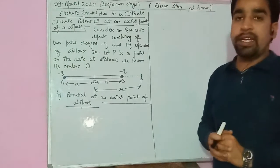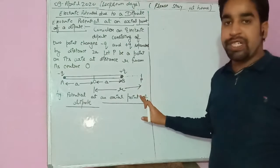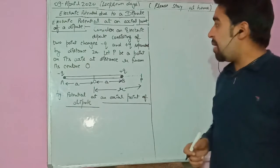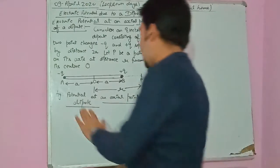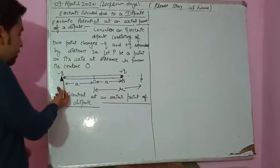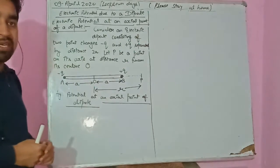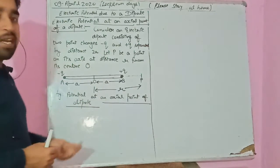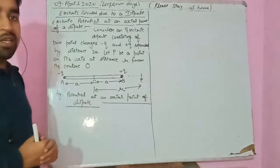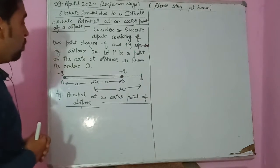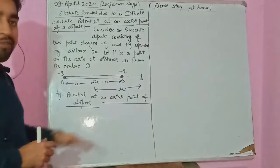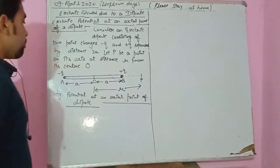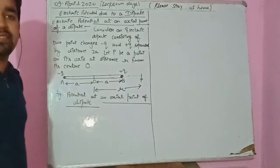Good afternoon students. Today in this lecture we are going to discuss electric potential at an axial point of a dipole. A dipole consists of two equal and opposite charges separated by a distance. As you can see in this figure, we have considered two equal and opposite charges, minus Q and plus Q, separated by a distance 2A. The dipole moment is given by p = Q × 2A.